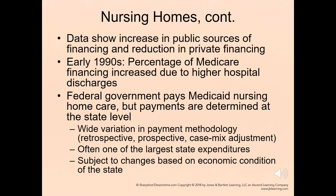The data shows an increase in public sources of financing and a reduction in private funding related to nursing homes. Early in the 1990s, the percentage of Medicare financing increased due to higher hospital discharges. The federal government pays for Medicaid nursing home care, but payments are determined at the state level, where there is wide variation in payment methodology — whether retrospective, prospective, or some type of case-mix adjustment.